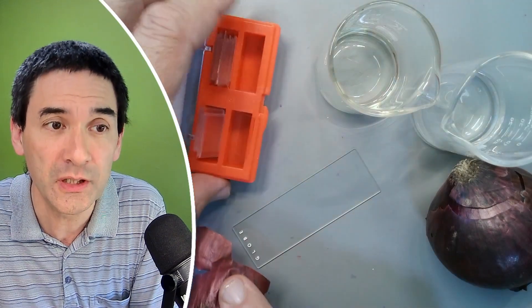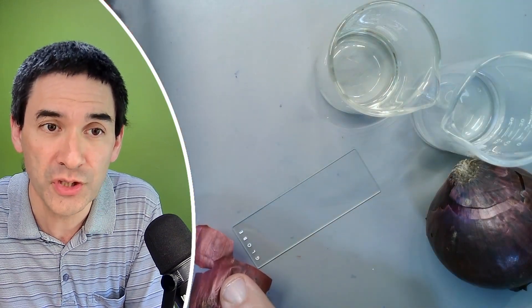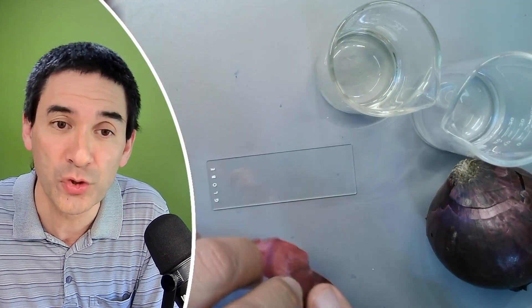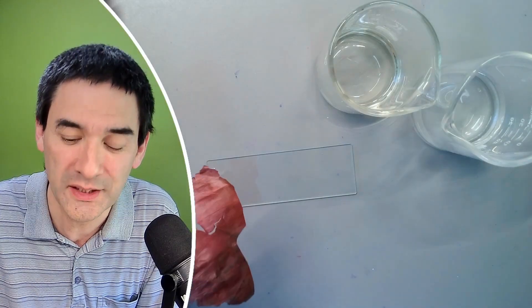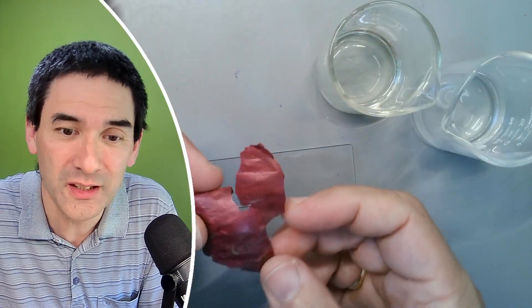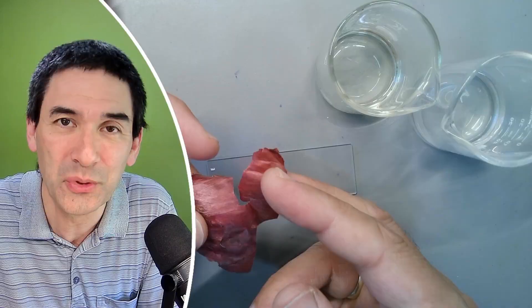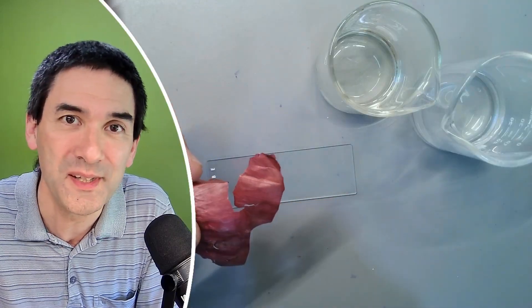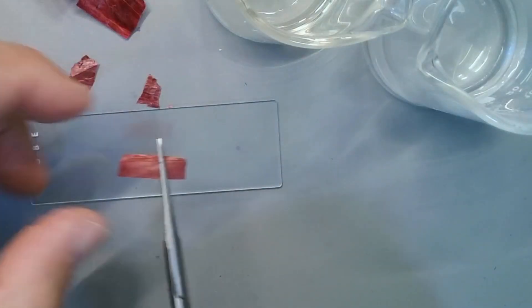Okay, we also need cover glasses over here. We're just going to put them to the side and of course a microscope slide. And this onion here, we don't need that right now. First things first, let's use some scissors to cut this onion skin into smaller pieces. So here we go.